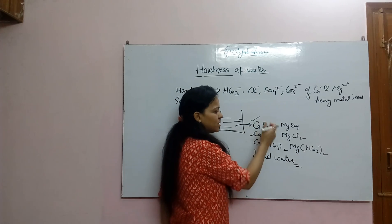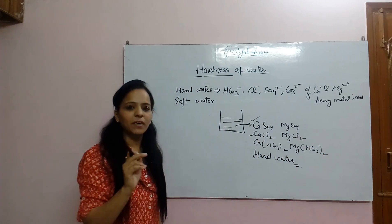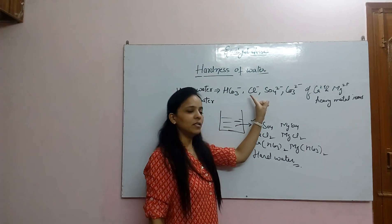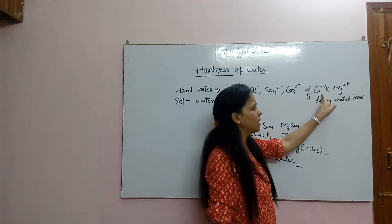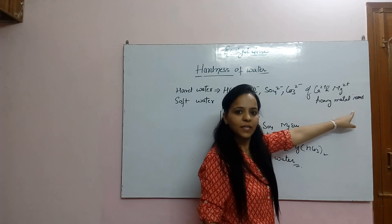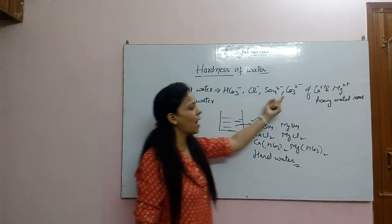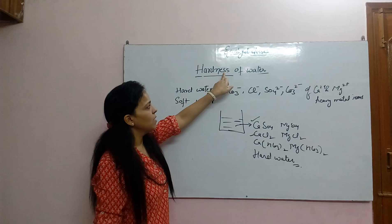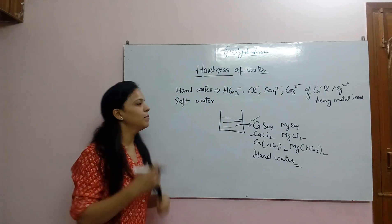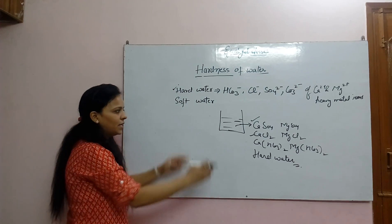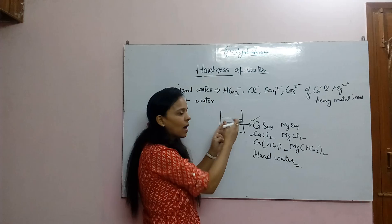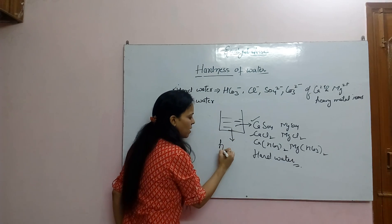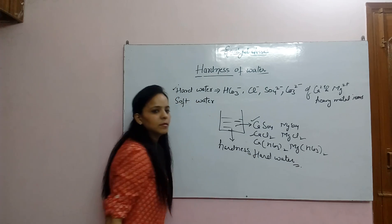अब हम देखेंगे hardness क्या है। Hard water में bicarbonate, chloride, sulfate और carbonate ions present हों — calcium और magnesium ions के, या कोई भी heavy metal ions के — वो पानी hard water है। And soft water वो है जो इन सब ions से free हो। पानी जब hard होता है, उस property को हम hardness कहते हैं।